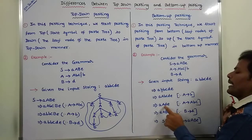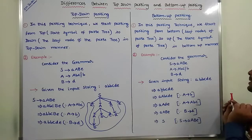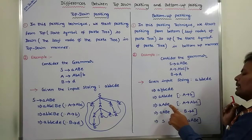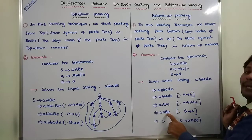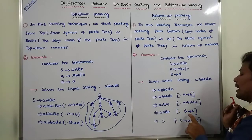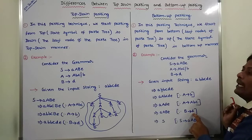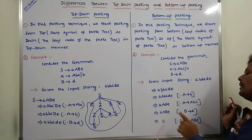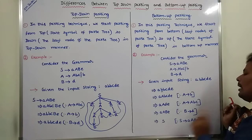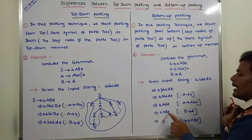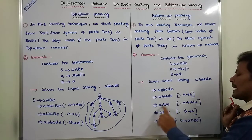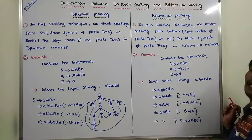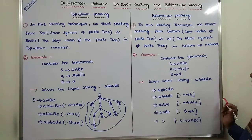We are getting small a, capital A, small d, small e. Next, small d can be replaced by capital B using the production B tends to d. Next, small a, capital A, capital B, small e — this can be reduced by capital S.